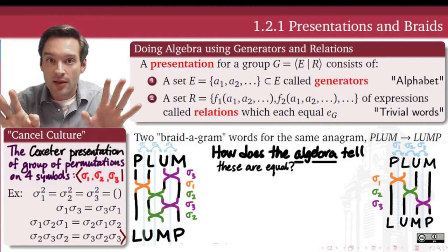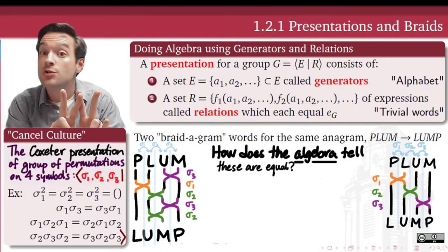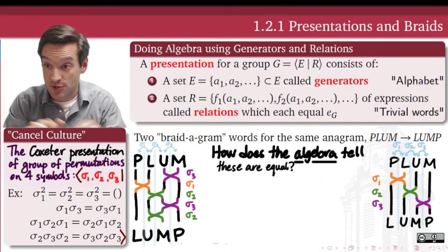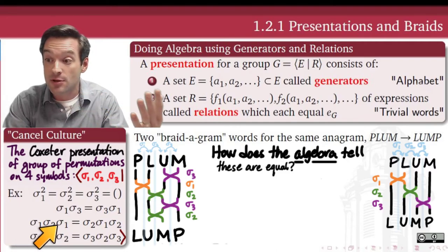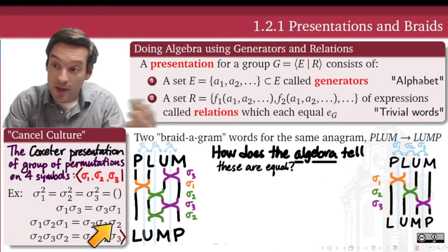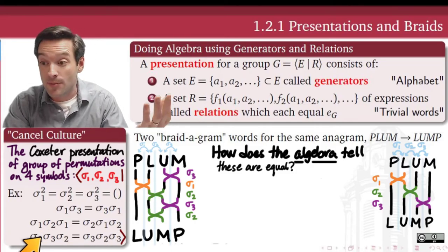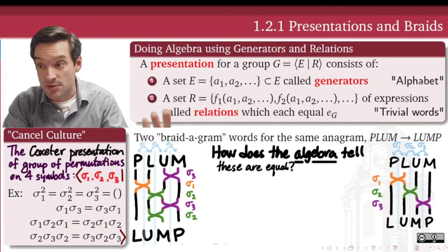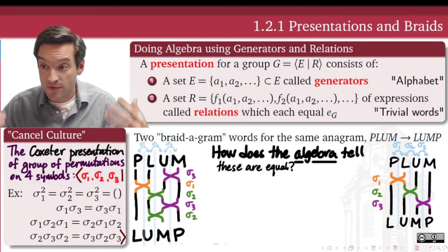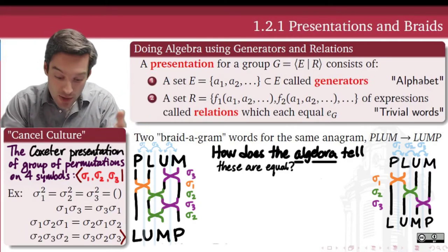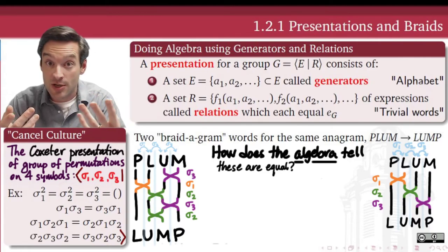The third type of relations are called skein relations, and they handle transpositions that share a strand. Sigma one and sigma two interact so that sigma one, sigma two, sigma one equals sigma two, sigma one, sigma two. Similarly, sigma two, sigma three, sigma two equals sigma three, sigma two, sigma three. These three types of relations — order, commutation, and skein — form a complete specification of the group of permutations on four symbols using generators sigma one, sigma two, and sigma three.